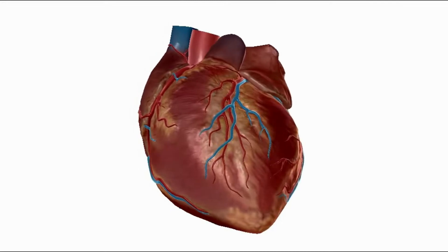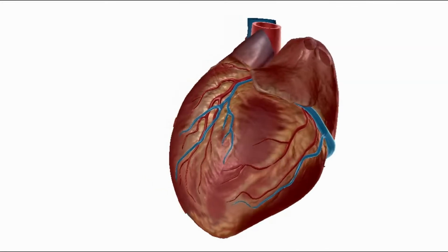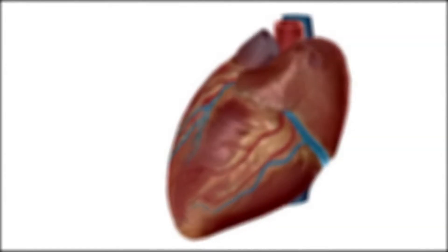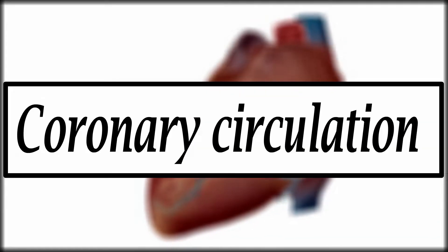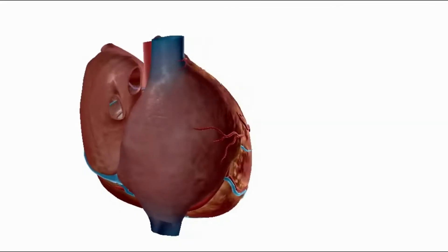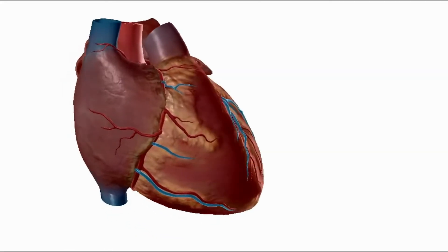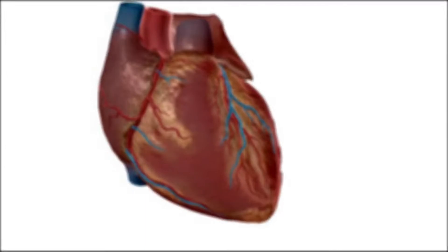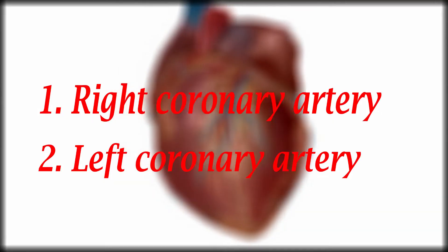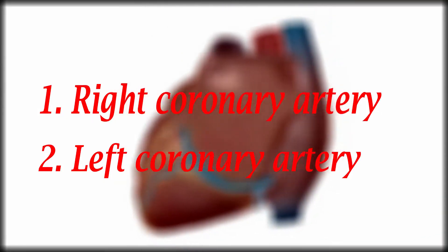The heart is supplied by the coronary arteries, so it's commonly known as the coronary circulation. There are two main coronary arteries: the right coronary artery and the left coronary artery.